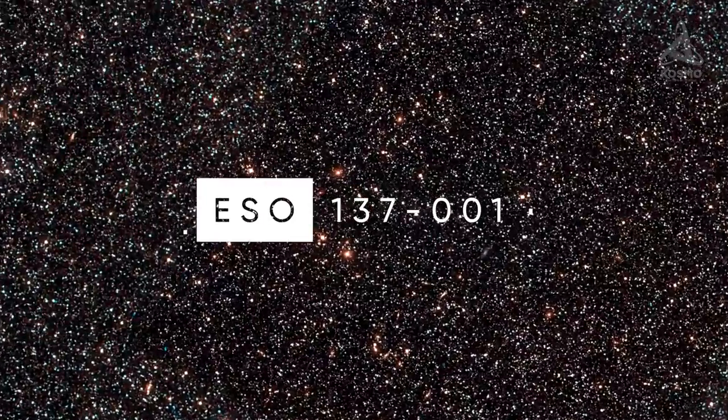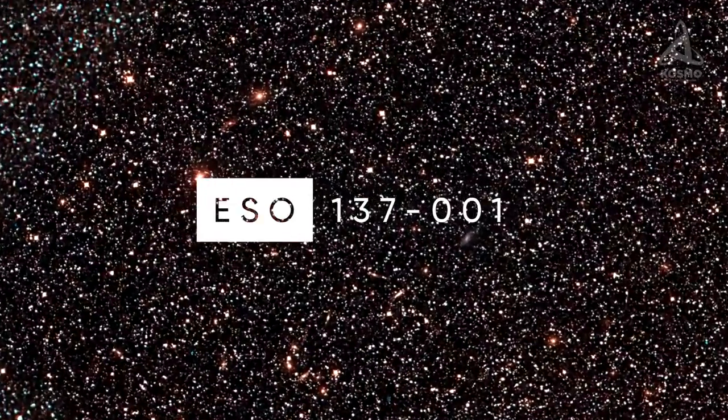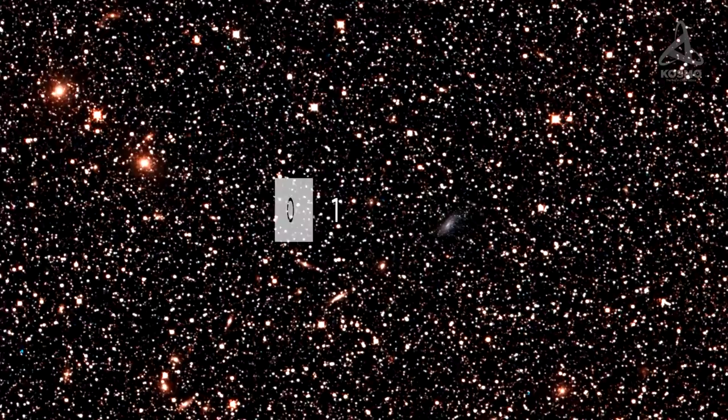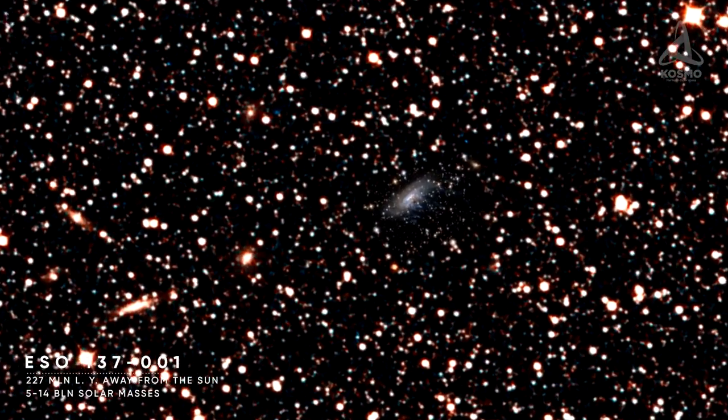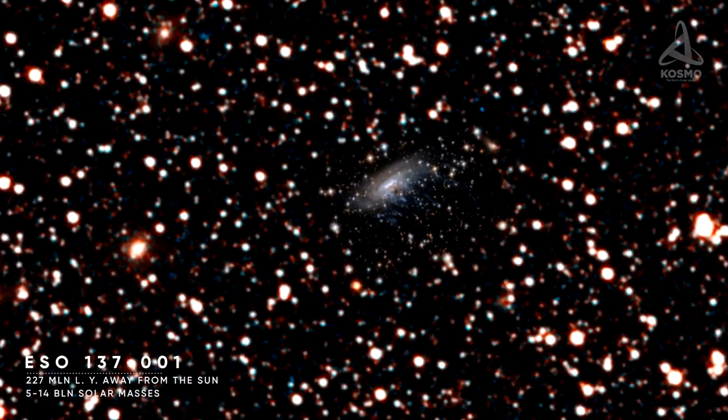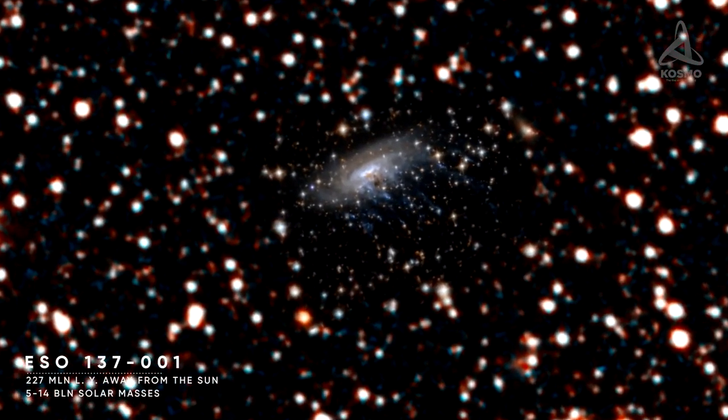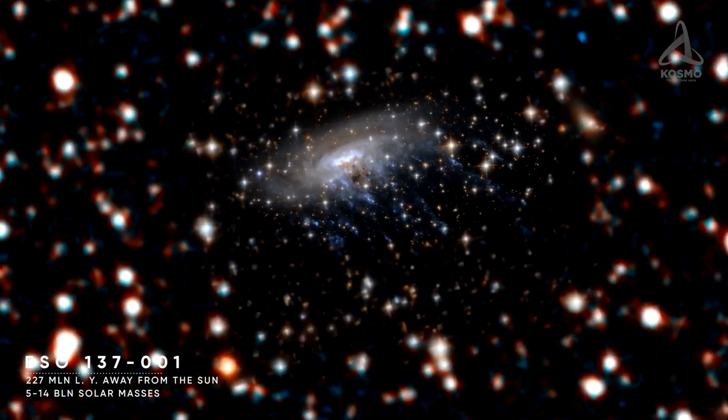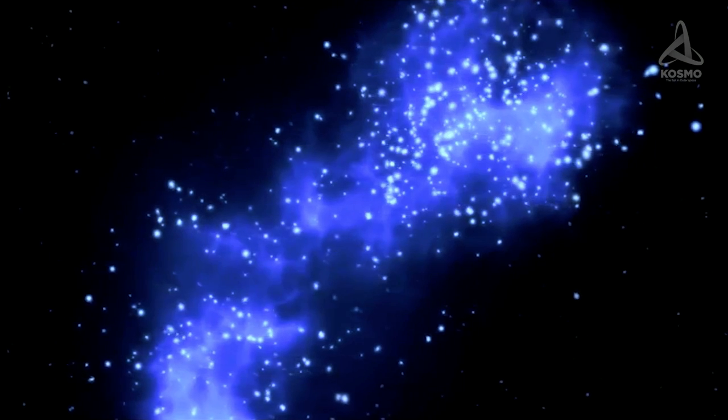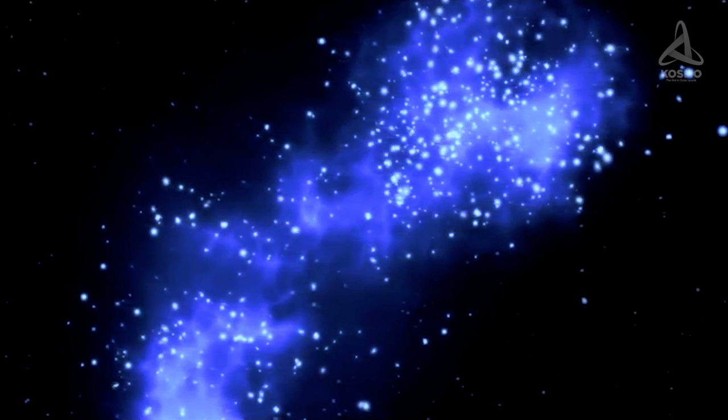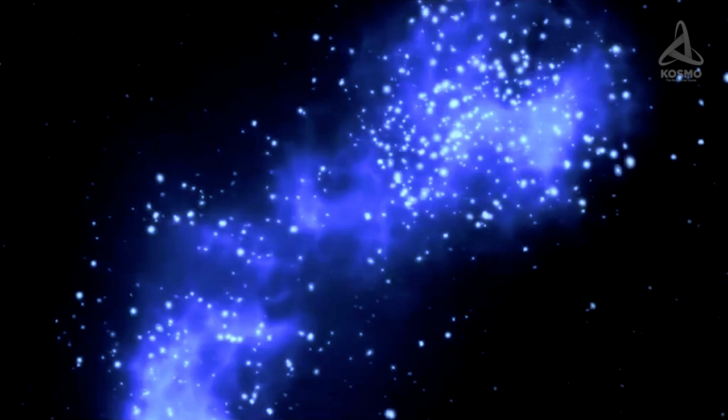M86 looks anything but unique. The galaxy ESO 137-001, which we'll be looking at next, has a similar shape. But unlike M86, it appears more outlandishly original. Located 227 million light-years away from the Sun, it is as heavy as 5 to 14 billion solar masses. As for its stars, most of them are young and bright blue giants.